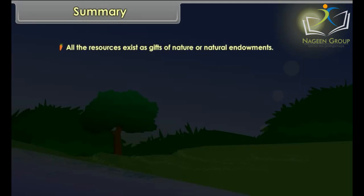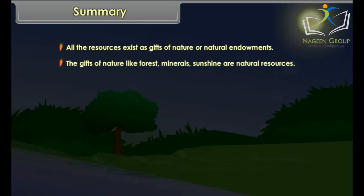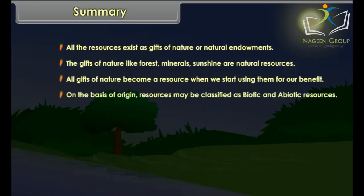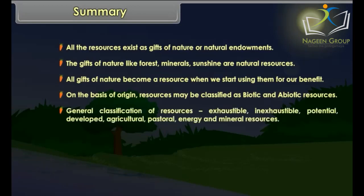In summary: all resources exist as gifts of nature or natural endowments, such as forests, minerals, and sunshine. All gifts of nature become a resource when we start using them for our benefit. On the basis of origin, resources are classified as biotic and abiotic. The general classification of resources includes exhaustible, inexhaustible, potential, developed, agricultural, pastoral, energy, and mineral resources.